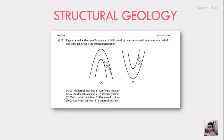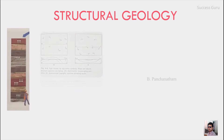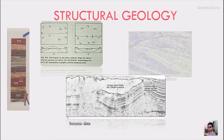Here is a question from JAM 2019. The figure shows a profile section of a fold traced by two cross-bedding sandstone layers. We have to find out whether it is an antiformal anticline, antiformal syncline, synformal anticline, or a synformal syncline. Can you answer this question or identify the fold in this image?